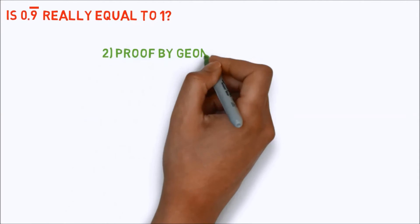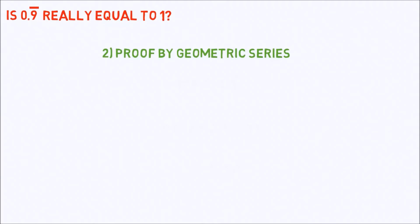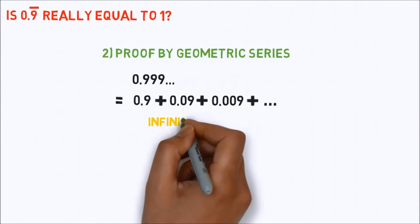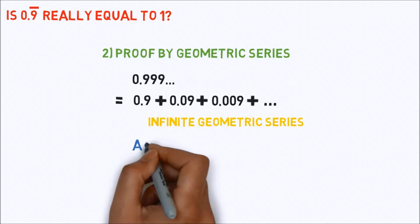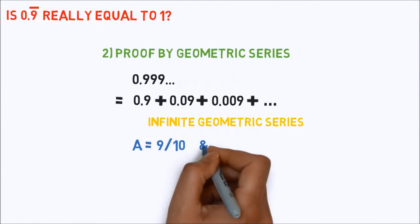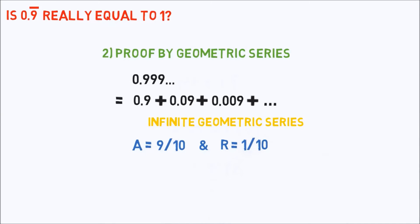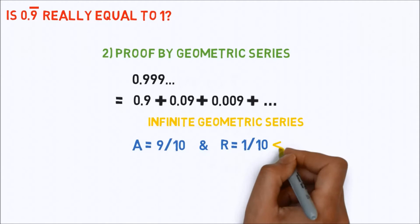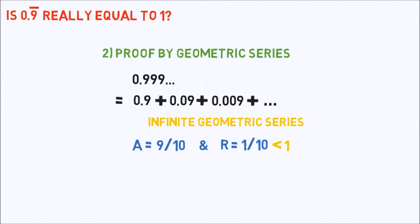Now, proof by geometric series. The number 0.999 to infinity can be expanded like this. This may also be written as an infinite geometric series, with first term equals 9 by 10, and common ratio equals 1 by 10. Since common ratio r is less than 1, we can use the infinite sum formula to find the value which proves that 0.9 bar equals 1.